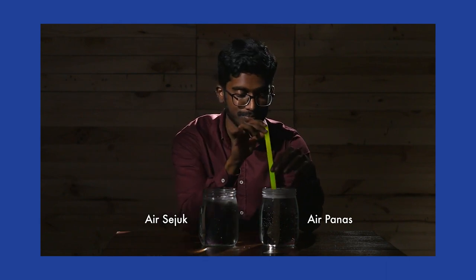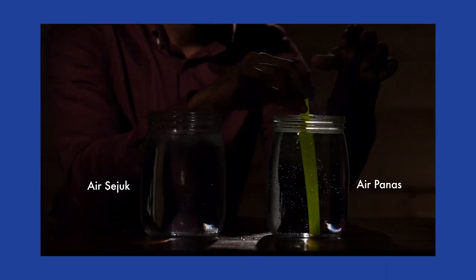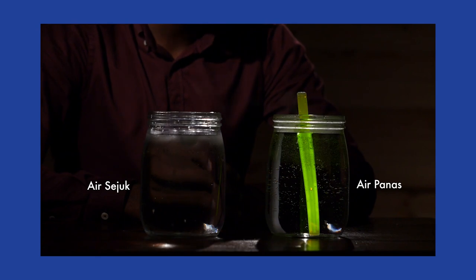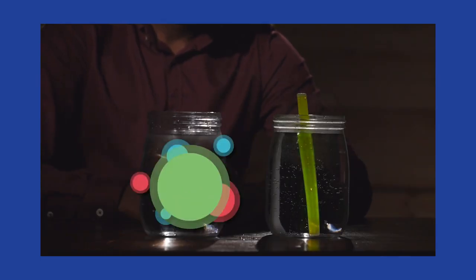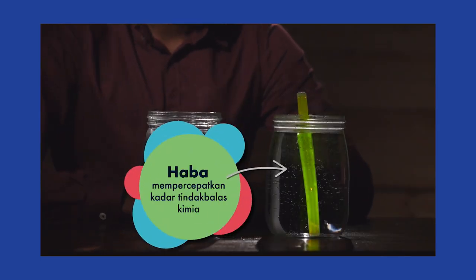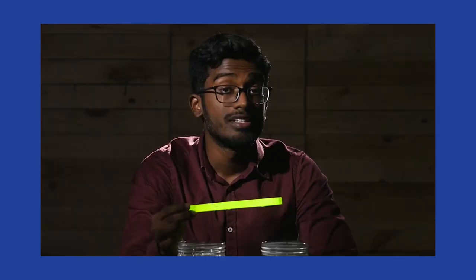Mula-mula masukkan rod bercahaya ke dalam bekas berisi air panas. Di sini kita boleh lihat rod bercahaya bernyala dengan lebih terang dalam bekas berisi air panas. Maksudnya haba telah mempercepatkan kadar tindak balas kimia di dalam rod bercahaya ini.